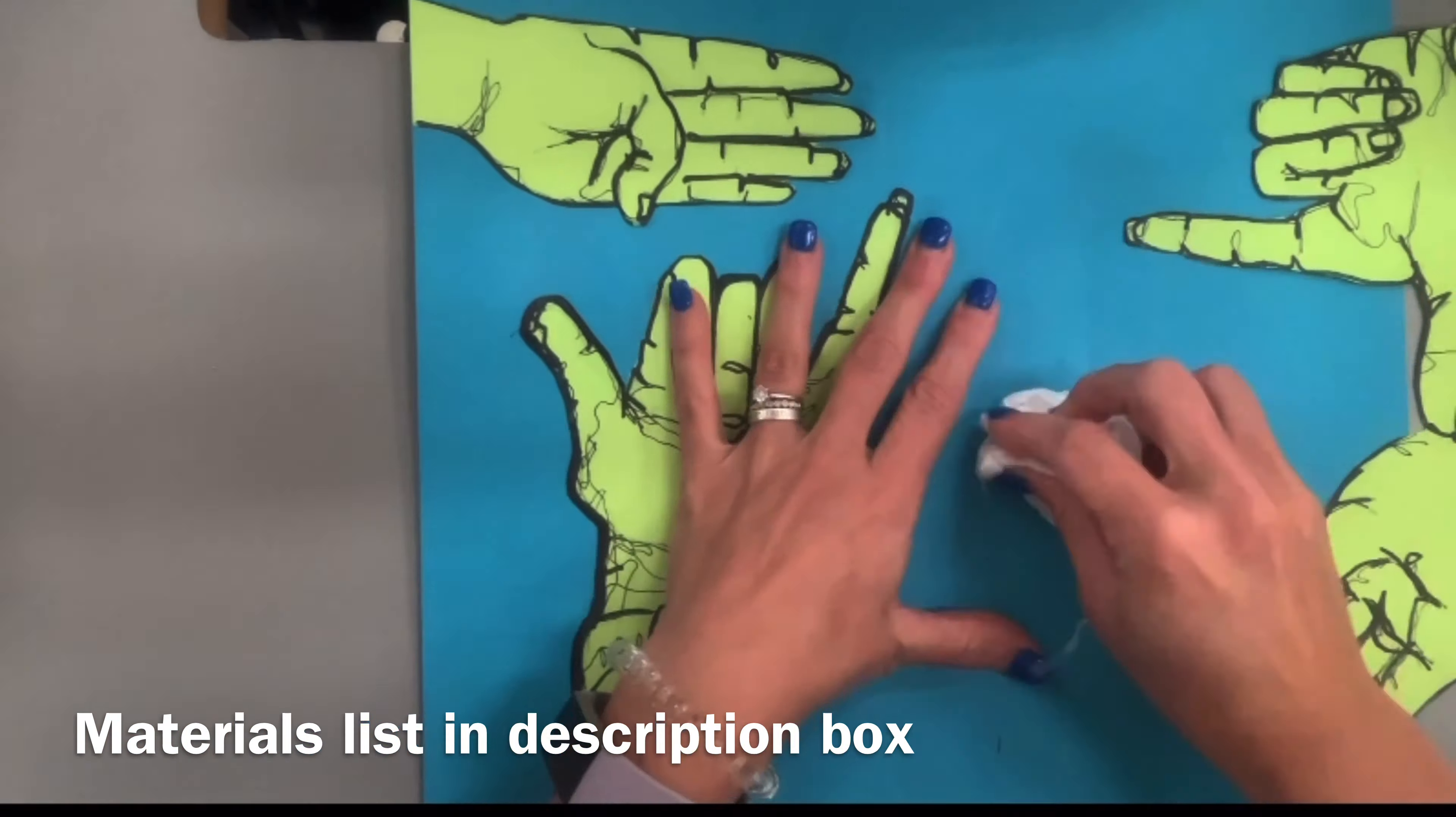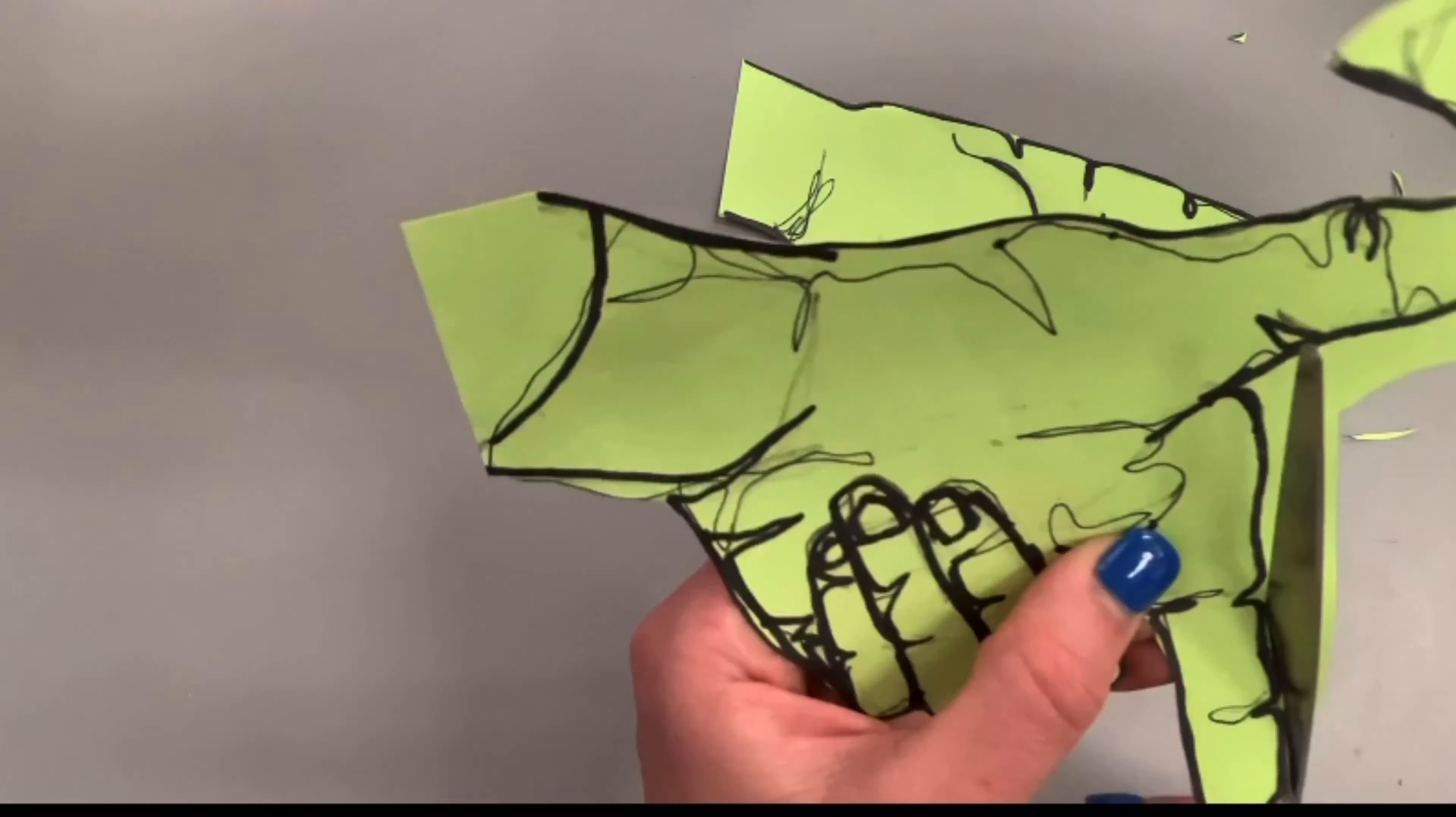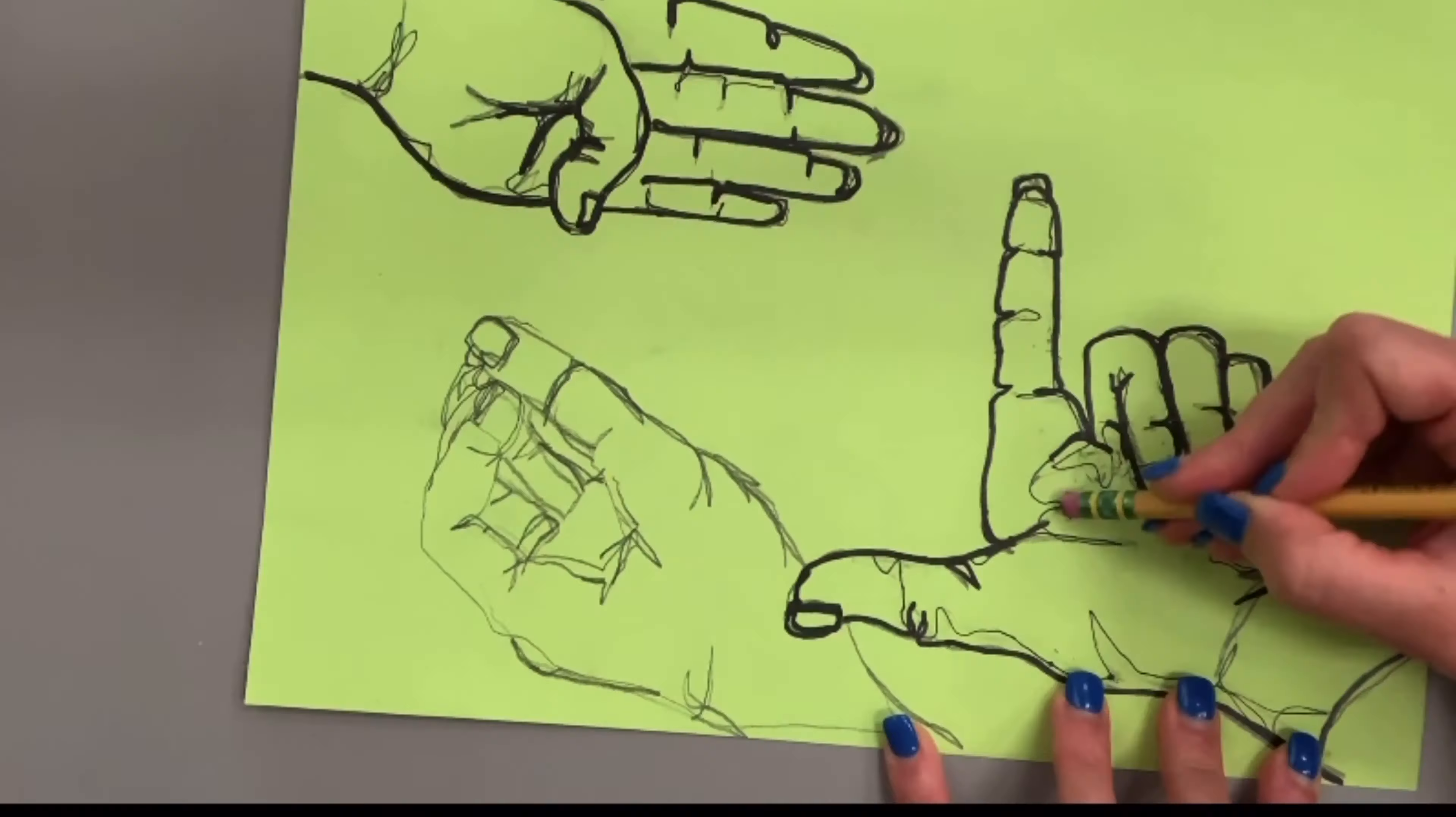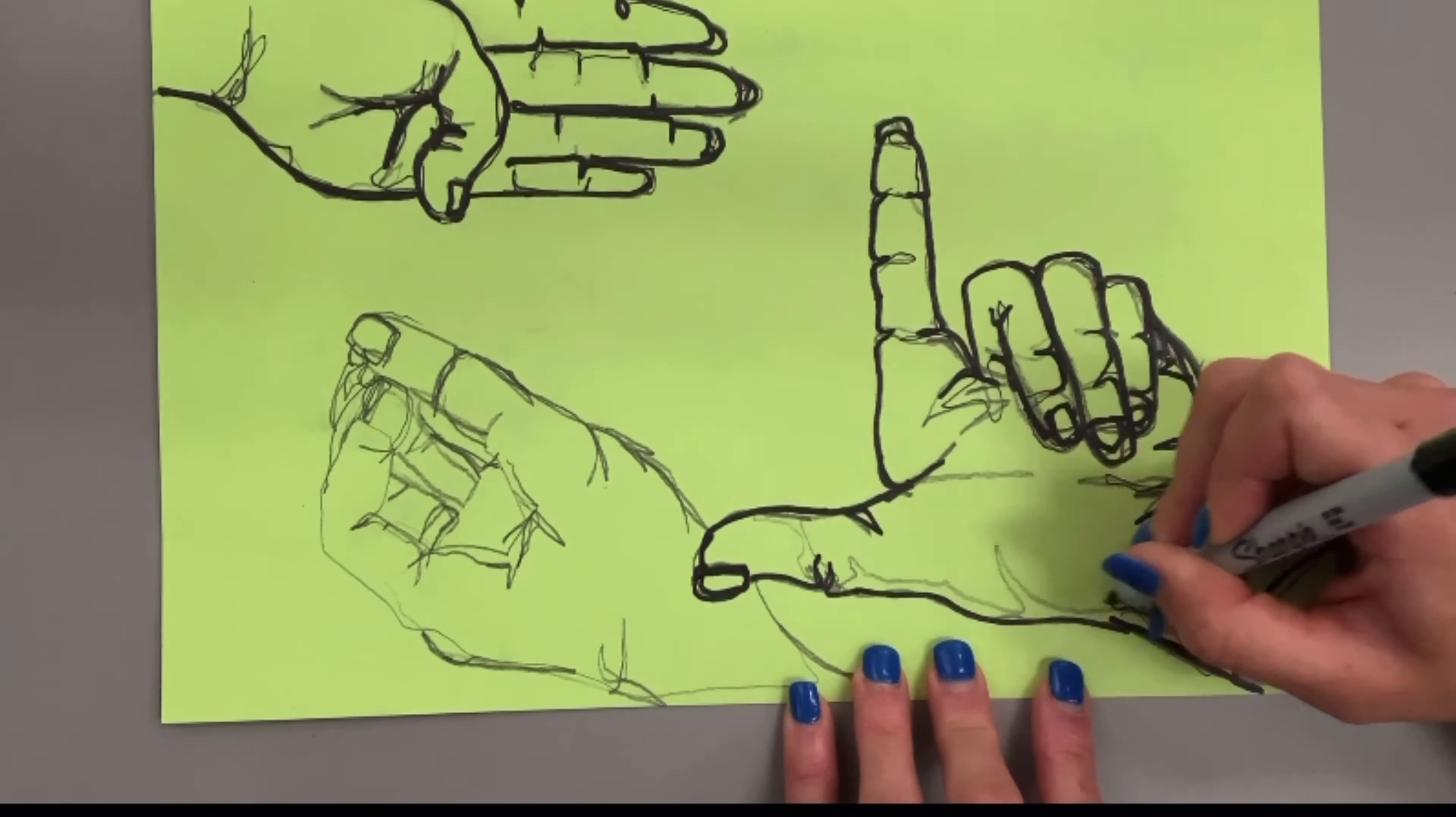You will need a pencil, some sort of drawing pen or set of drawing pens, a glue stick, a pair of scissors, and two colorful contrasting pieces of paper.